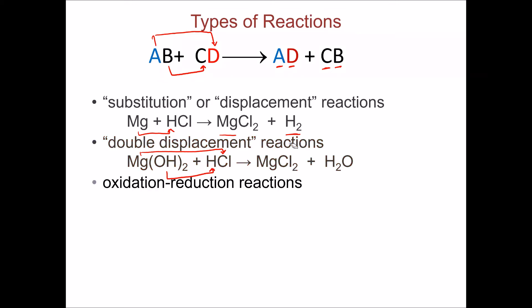The third type is oxidation-reduction reaction, sometimes called redox reactions. These reactions involve electron transfer between the reactants. If you follow the oxidation state, you will find that the reactants undergo a change in oxidation state. For example, magnesium starts with an oxidation state of zero because it's a neutral element, while hydrogen is plus one. When you react them together, you make a magnesium salt with magnesium having a two-plus charge, meaning it lost two electrons, while hydrogen will have a zero charge, meaning it gained two electrons.